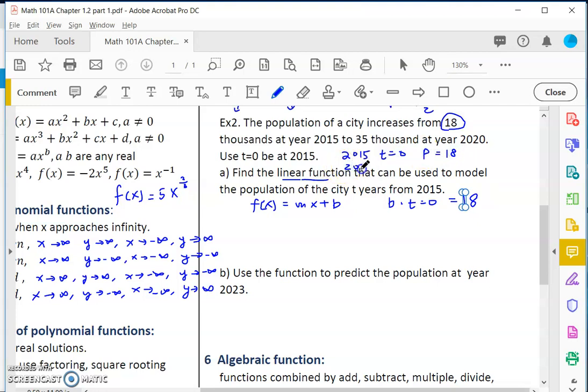In 2020, t would be 2020 minus 2015, which is 5. Population is 35. Obviously this would be y2, y1, x2, x1. So my m would be 35 minus 18 over 5 minus 0, which is 7 over 5, or 1.4.